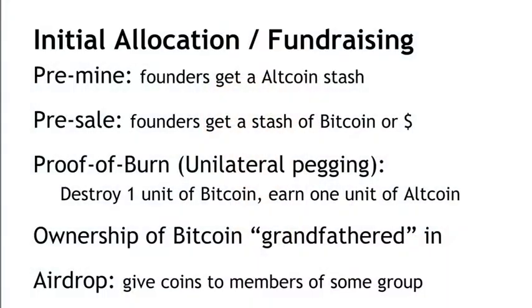A very important thing for an altcoin is to provide some way of initially allocating units of the currency to individuals besides just the mining process. In every mining-based coin, some new coins are created and handed out to miners who solve proof-of-work puzzles and earn mining rewards. But there are other ways of allocating coins as well. One is called a pre-mine, where the founders of the currency reserve some portion of the money supply for themselves — they get a stash of units of their own altcoin. Sometimes they say that this pre-mine amount is intended to be used for further development of the currency, for example to pay developers.